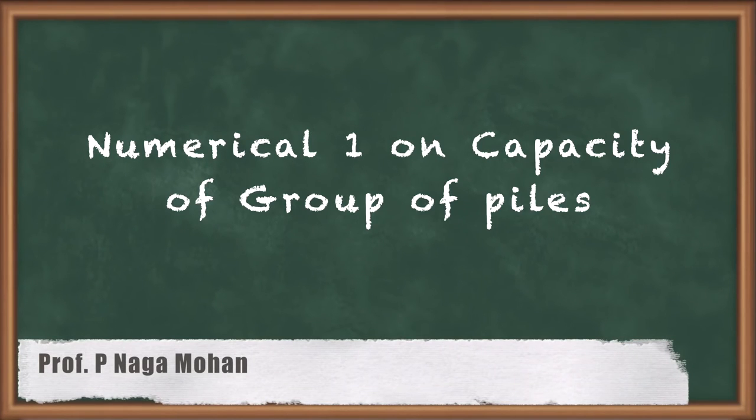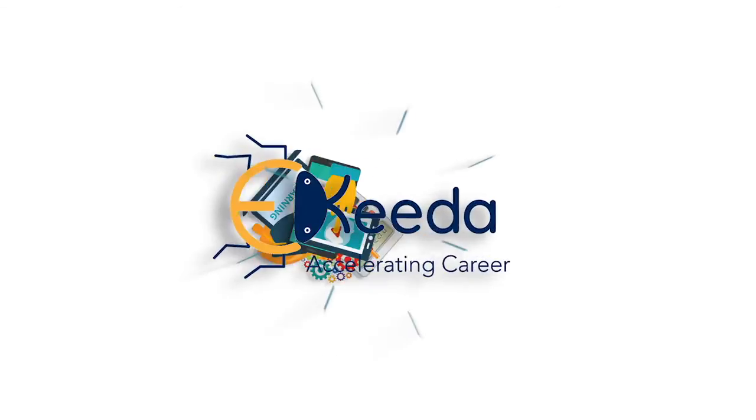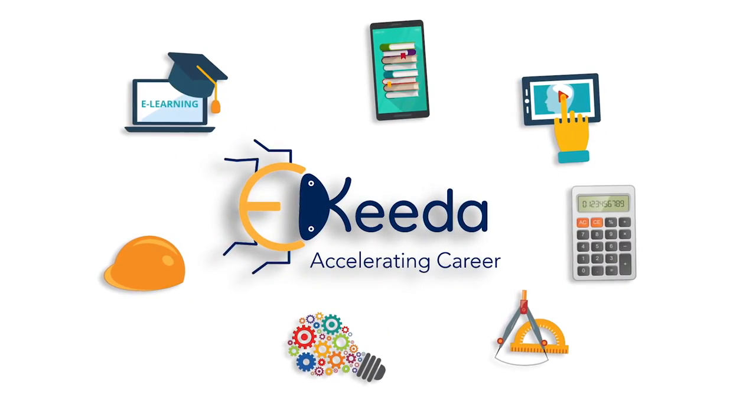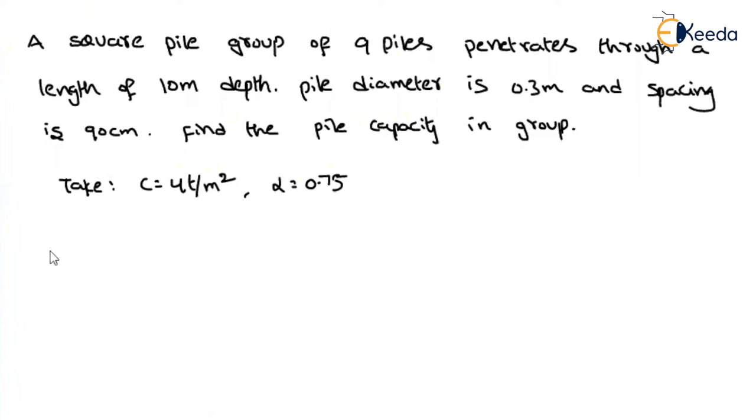Hello friends, let us solve problems based on pile capacity in groups. First, read the given data. What is given? A square pile group of 9 piles penetrates through a length of